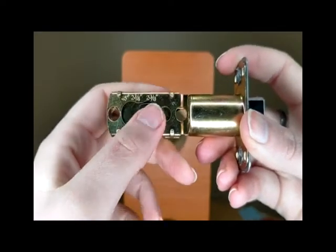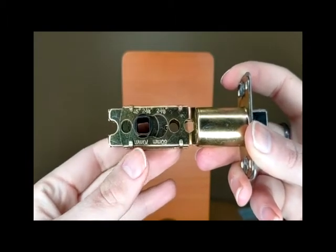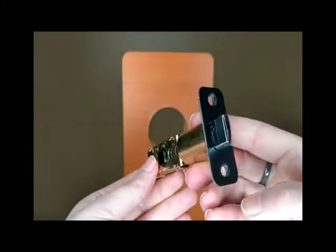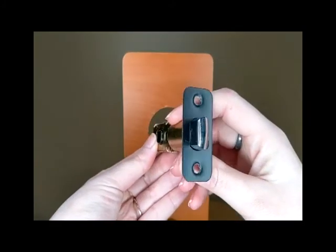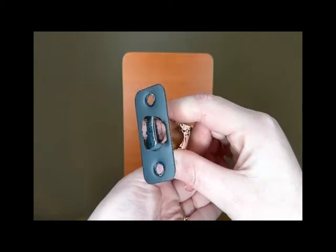One of the great features of this doorknob set is that the backset is adjustable. By simply toggling, you can switch from a 2⅜ inch backset to a 2¾ inch backset. It can also be used for both in-swing and out-swing doors by simply rotating the latch.